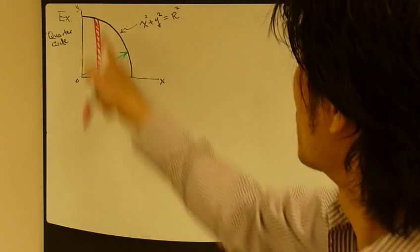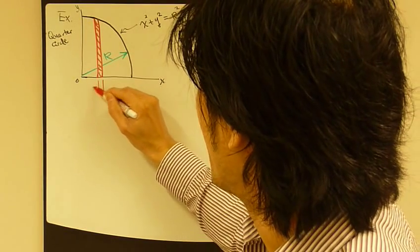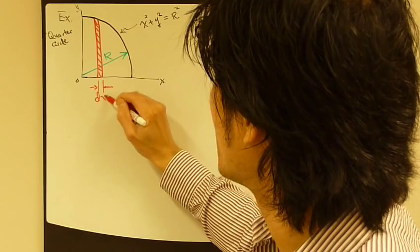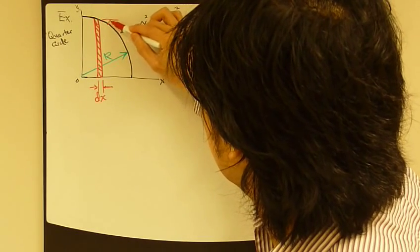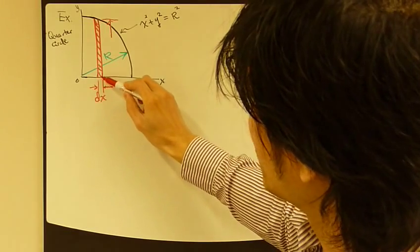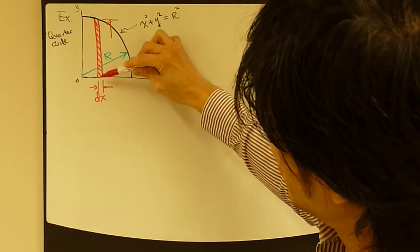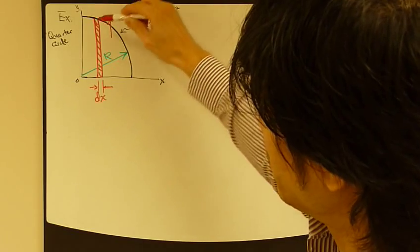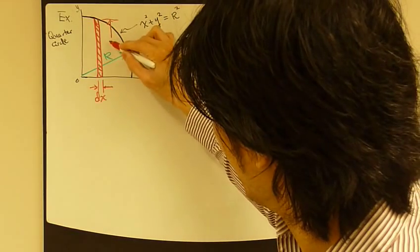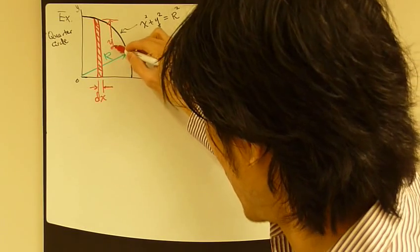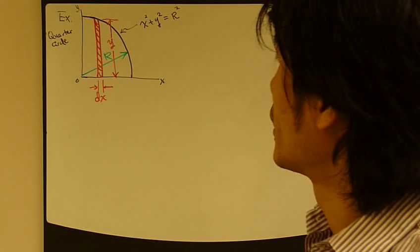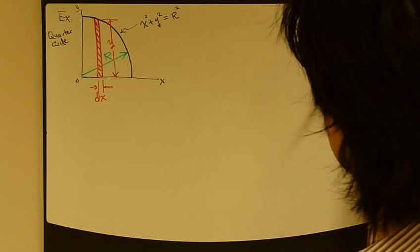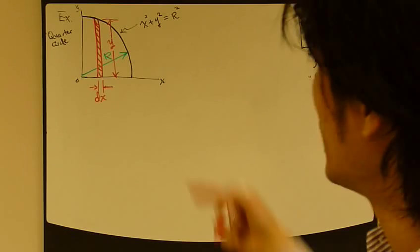So for this strip right here, I have width of dx, and the height of this strip right here is measured from 0, y equals 0, all the way up where it hits this curve, which is y. So the height is y.